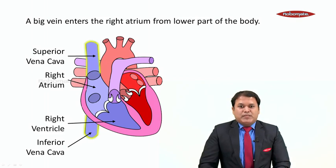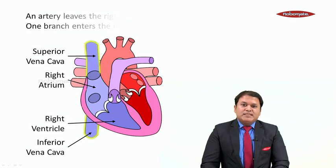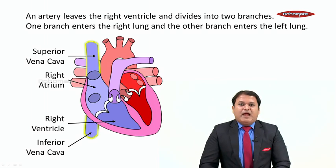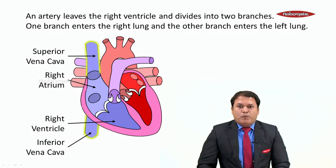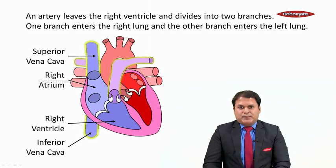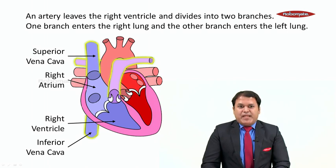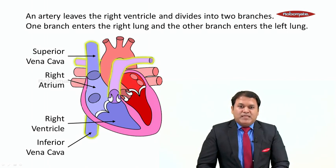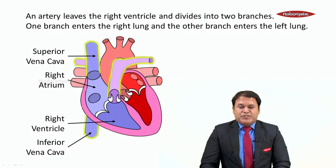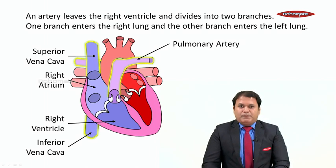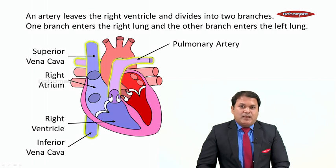Now moving to the right ventricle. You can see in the diagram an artery leaves the right ventricle, and after coming out it divides into two branches. One branch enters the right lung and the other branch enters the left lung. Now this artery which leaves from the right ventricle is called as the pulmonary artery — pulmonary because it enters the lungs.